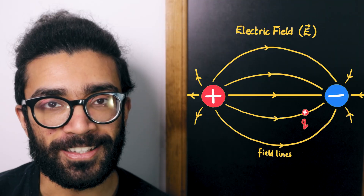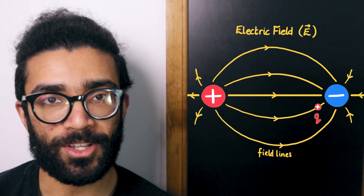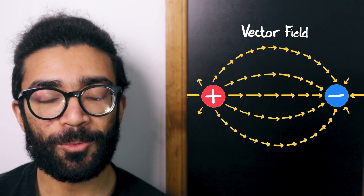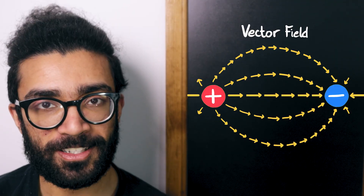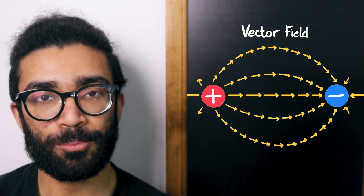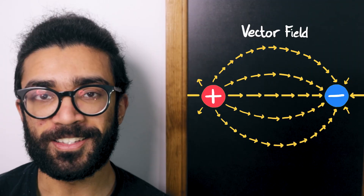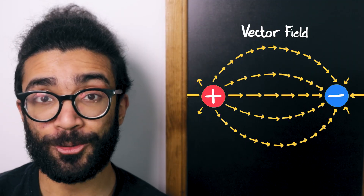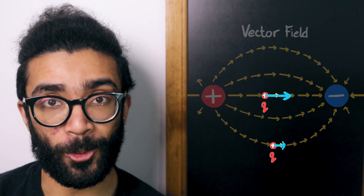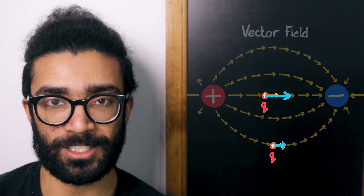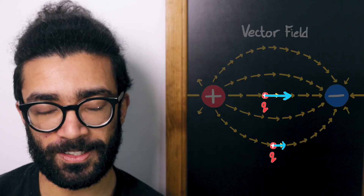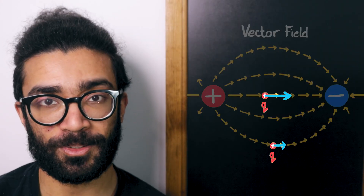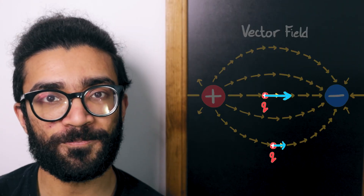It's also worth noting here that electric fields are vector fields. This means that we can assign a vector to every single point in this region of space. The size of each vector is related to how strong a force our small positive charge would experience, and the direction simply gives the direction in which the force is applied.